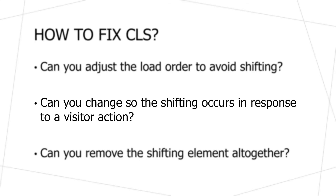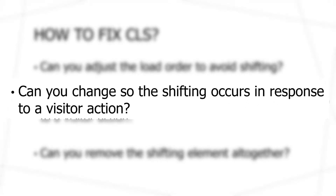If you can't adjust the load order, you can also look to see if you can change the shifting so that it occurs in response to a visitor's action. For example, if a large image is causing shifting and you can't change the load order, you could put that image behind a show/hide functionality. If visitors click show, they see the image; if they click hide, they don't. When they click show or hide, things might shift around the page, but now that's in response to a visitor's action, making the shifting expected instead of unexpected and reducing your CLS score.